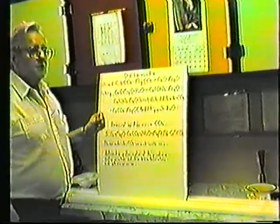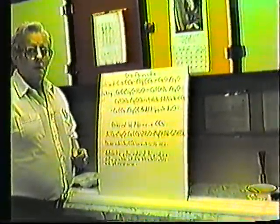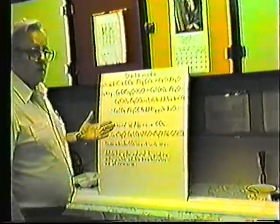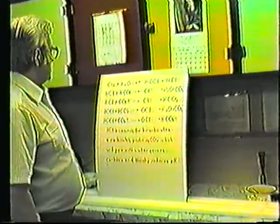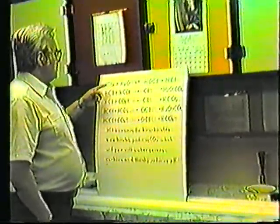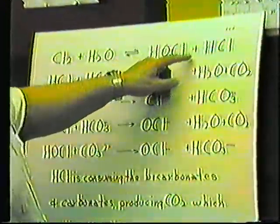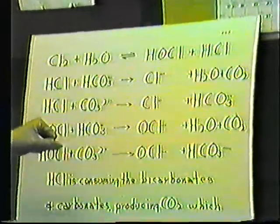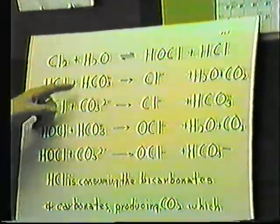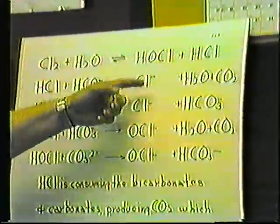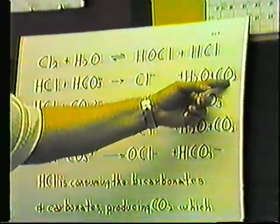One important thing you must do when you have this compound in your swimming pool is backwash regularly. Now, where does the CO2 come from? When you add chlorine to your water, you end up with hypochlorous acid and hydrochloric acid. The hydrochloric acid combines with the bicarbonates in your water and produces chloride, water, and CO2.